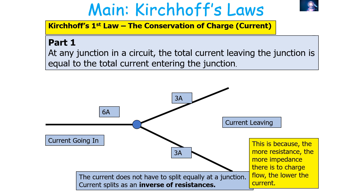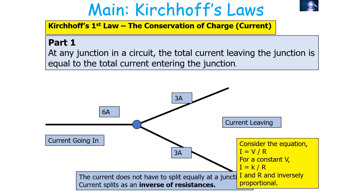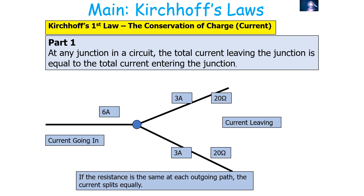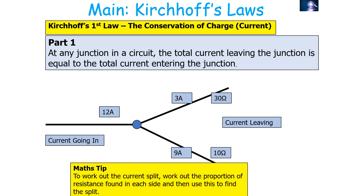Considering the equation I = V/R, for a constant value of V we can say I = K/R, where I and R are inversely proportional. If the resistance is the same in each parallel path, then the current splits equally. If the resistance is double on one path compared to the other, the current is half on that path. If the resistance is triple on one path, the current is one third on that path. To work out the current split, calculate the proportion of resistance found on each side and use this to find the split.